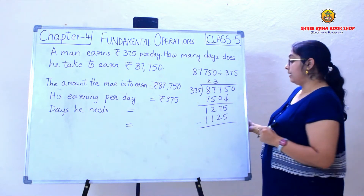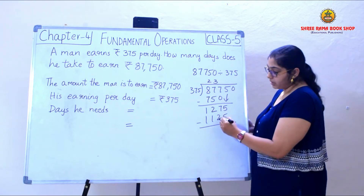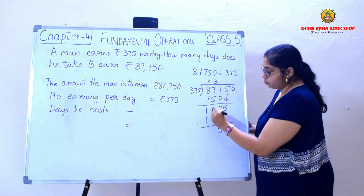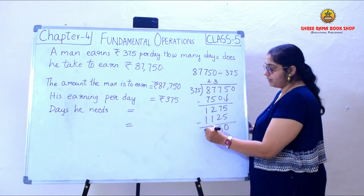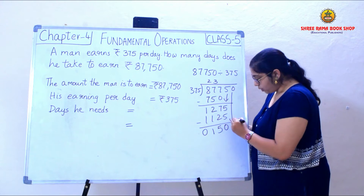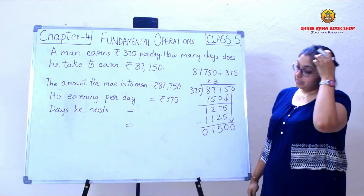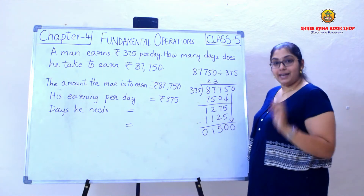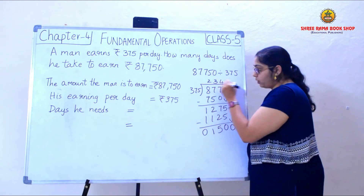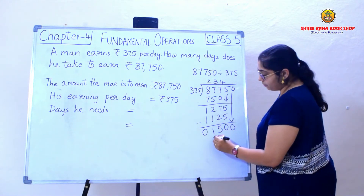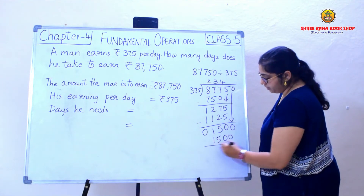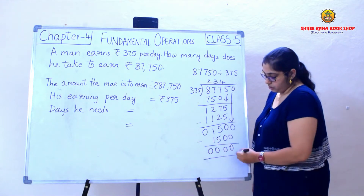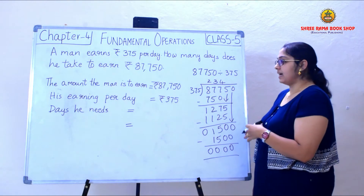I subtract again: 5 minus 5 is 0, 7 minus 2 is 5, 2 minus 1 is 1, and 1 minus 1 is 0. I bring the next digit down. The new number is 1,500. In the table of 375, taking 4 times gives exactly 1,500. So 0 minus 0 is 0, 0 minus 0 is 0, 5 minus 5 is 0, 1 minus 1 is 0. The remainder is 0.